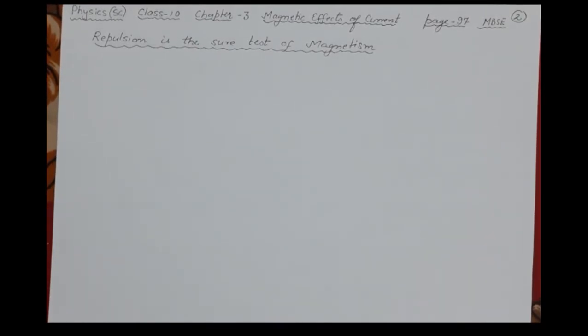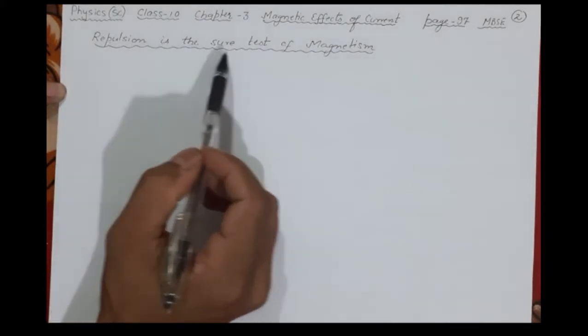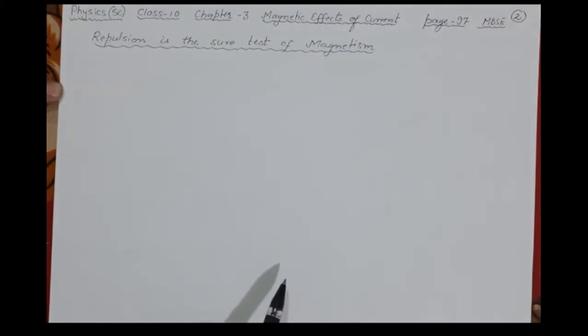Welcome back to the SD Online Classes. In this class, what we shall do is we will try to understand why repulsion is the sure test of magnetism — its meaning and its demonstration. You know that one magnet can attract another magnet, and one magnet can also attract a piece which is simply iron.